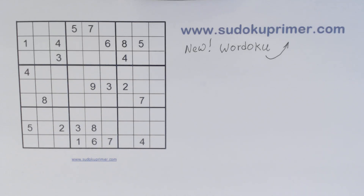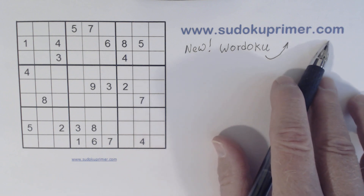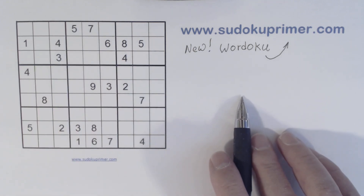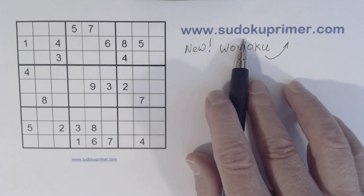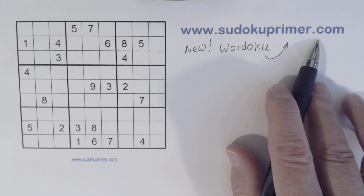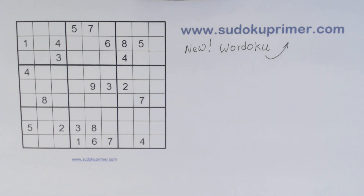This puzzle is a request from Sabaya — I hope I'm saying your name correctly, I'm sorry if I'm pronouncing it wrong. He requested that I solve this puzzle so he can see how it can be solved. This puzzle was printed using an Excel spreadsheet available on SudokuPrimer.com. You can find it in the free blank Sudoku grids section, where there are Excel spreadsheets and other formatted blank Sudoku grids you can download for free.